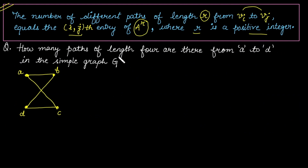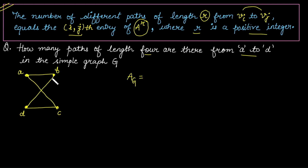For example, to count the number of paths of length 4 from vertex a to d in a given simple graph, we first construct the adjacency matrix. The total number of vertices is 4, so the matrix order is 4×4.